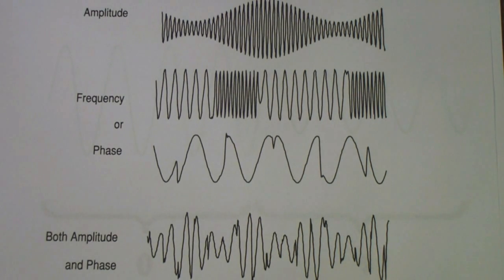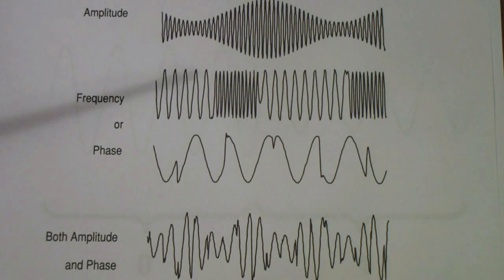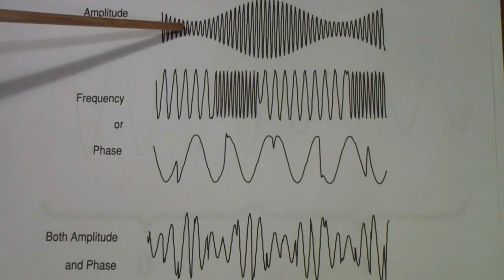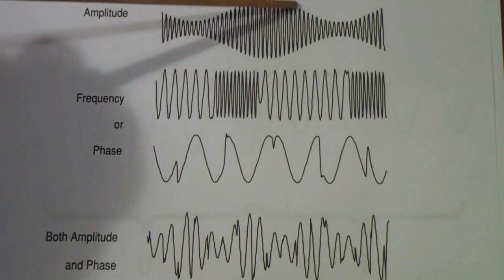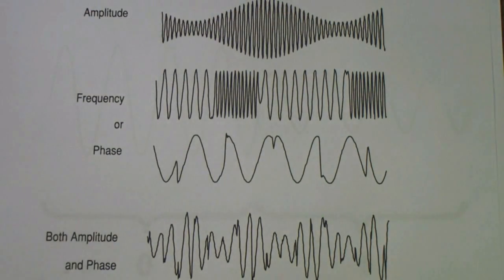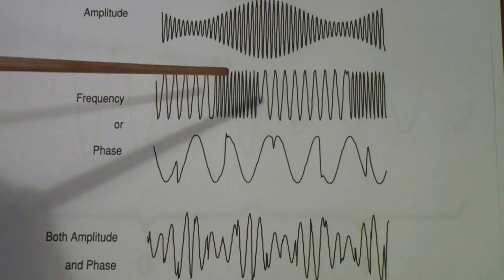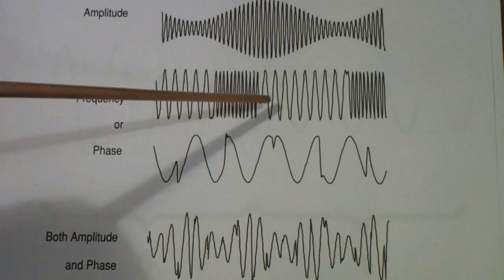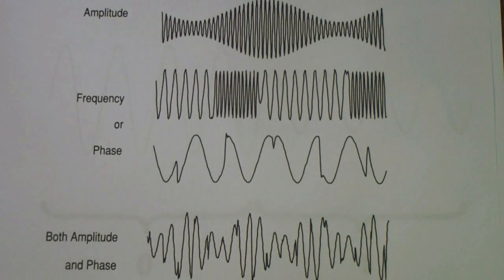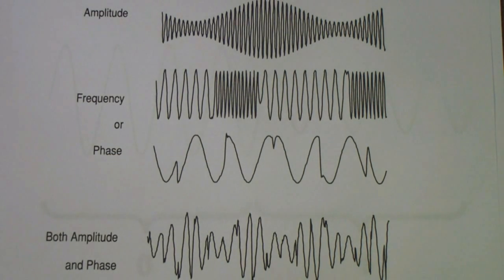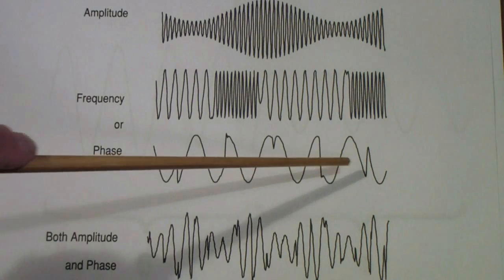Here are some examples of carriers modulated by analog signals. The first is amplitude modulation, where the carrier's amplitude is altered by the modulation. The second is frequency modulation, where as the analog signal changes, the carrier frequency changes. The third is phase modulation, where the phase of the carrier changes.